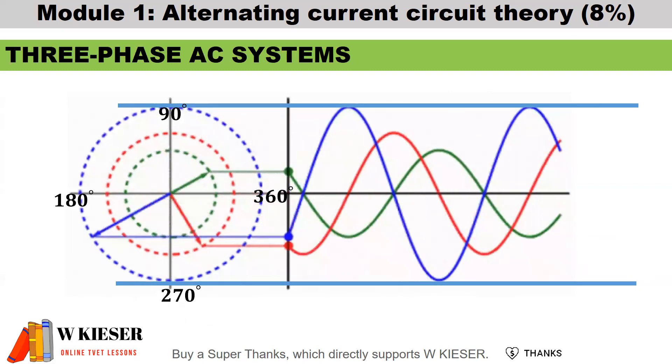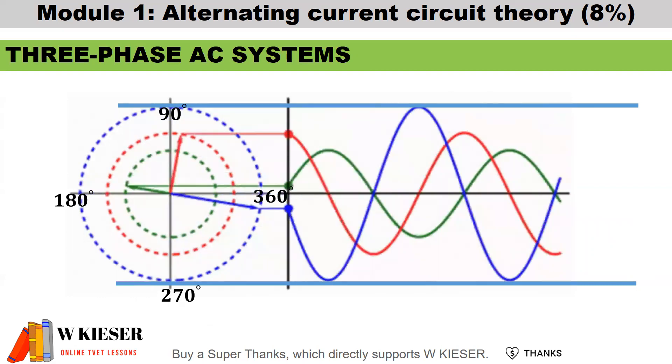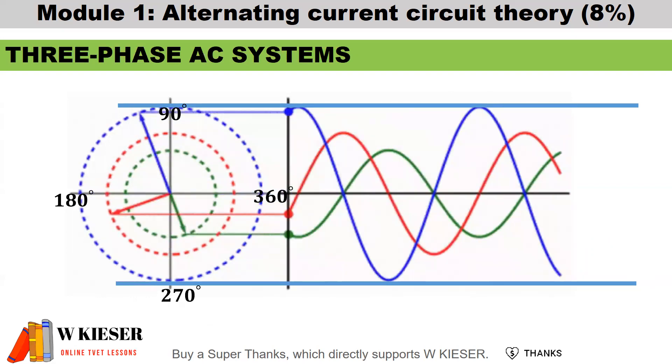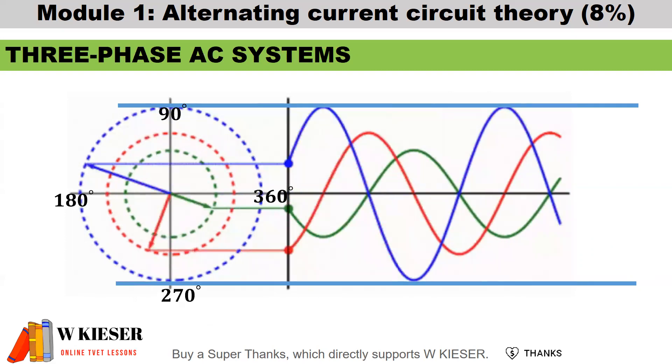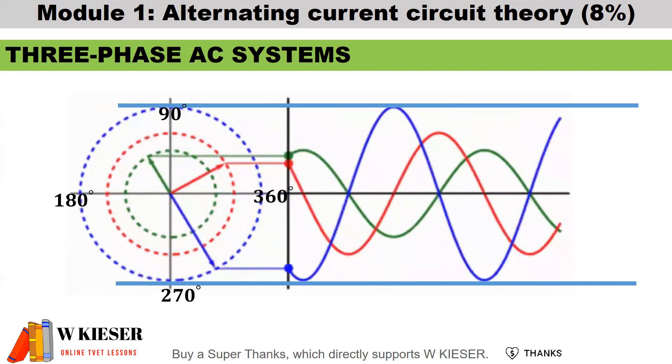Moving on to three phase AC systems. Here we have three coils placed 120 degrees apart. And as each coil cuts through the lines of flux at right angles at 90 degrees and 270 degrees, maximum EMF is produced.